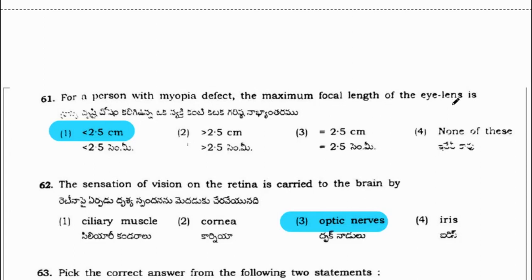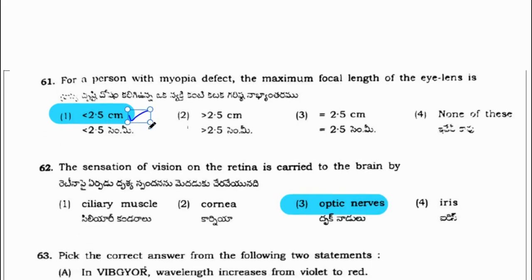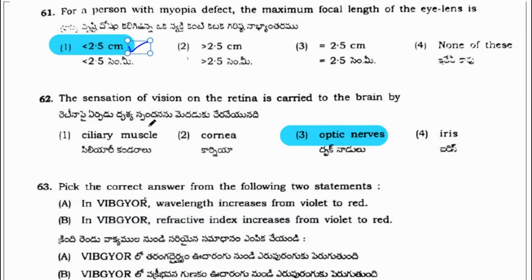For a person with myopia defect, the maximum focal length of the eye lens should be less than 2.5 cm. The sensation of vision on the retina is carried to the brain by optic nerves.